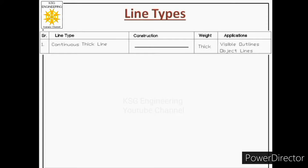The first type of line is the continuous thick line. The word 'continuous' refers to its construction and 'thick' refers to its weight. Its construction is a solid line with no break from start to end. So it is a continuous thick line.